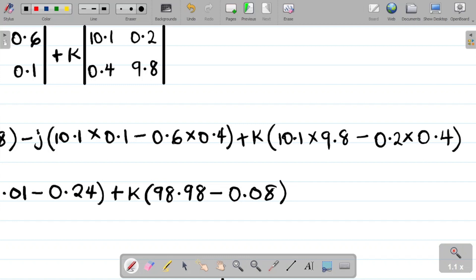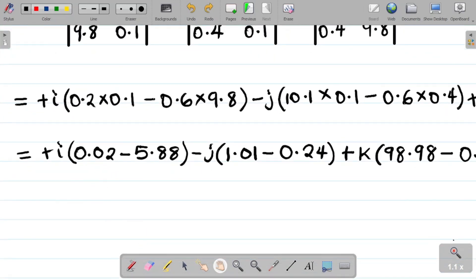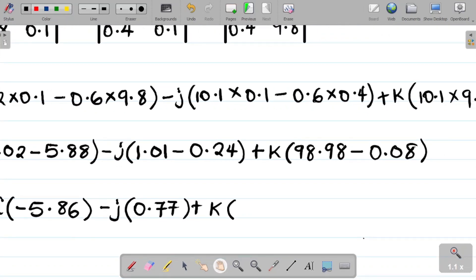So I have this. If this is the case, let's get each of them. That's now equal to plus i into. Let's take 0.2 times 0.1, what do we get? This is about 0.02, so this becomes 0.02 minus. Next up is 0.6 times 9.8, that's about 5.88, so 5.88. Minus j into 10.1 multiplies 0.1, that's about 1.01, so 1.01. Minus next thing I have there is 0.6 times 0.4 and that's about 0.24, so 0.24. Then plus I have k, so plus k into, what's next in there? 10.1 times 9.8 and that's about 98.98, so I have that as 98.98 minus 0.2 times 0.4, that's about 0.08, that gives me 0.08.